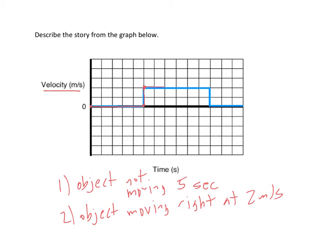So for the next six seconds, it's going at two meters per second. So it travels to the right for a little bit of time, and then all of a sudden, its velocity is zero again. So the third step here is the object has stopped moving.